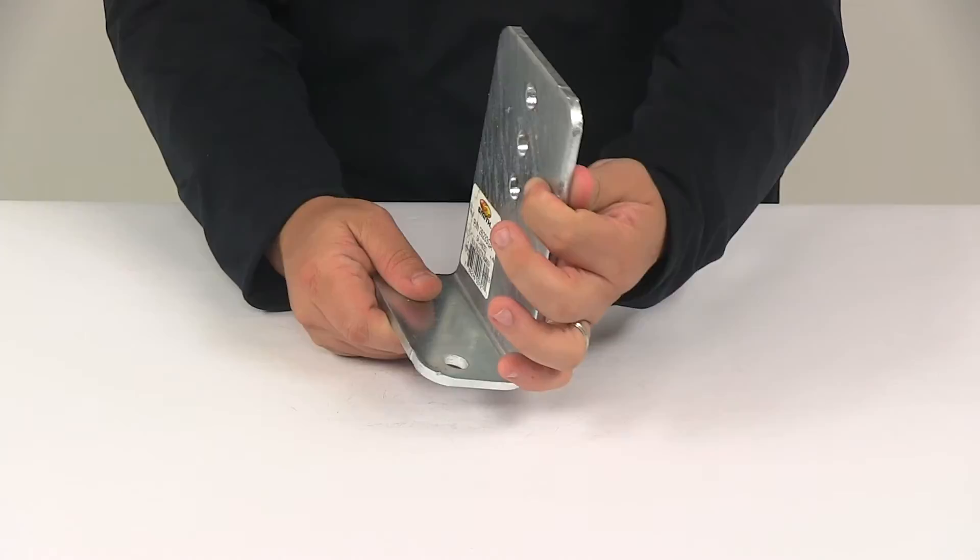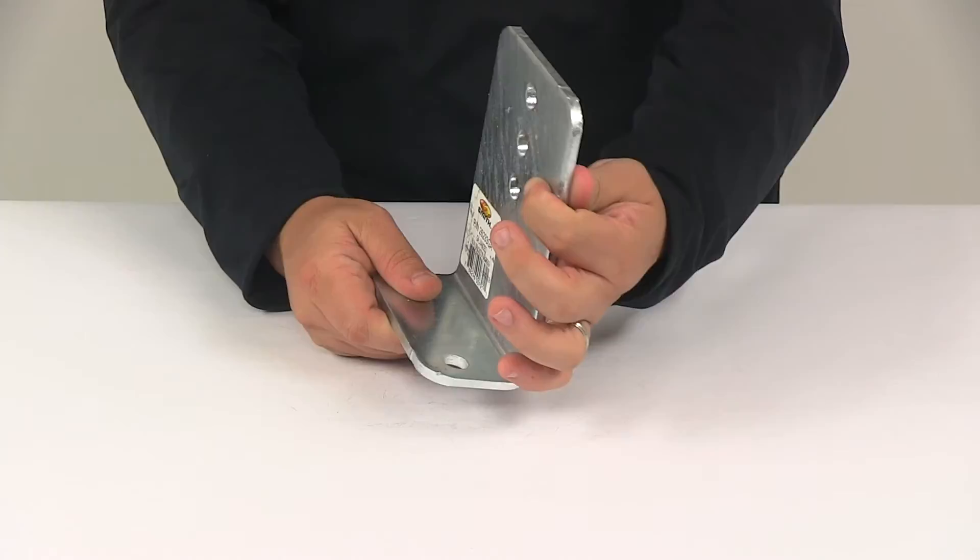And then the plate thickness, the unit's made from quarter inch thick steel. That's going to do it for today's look at the replacement CE Smith Heavy Duty Vertical Bunk Bracket.